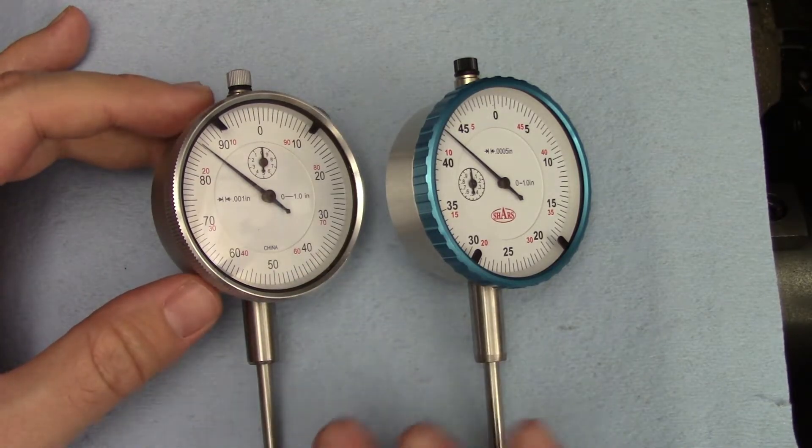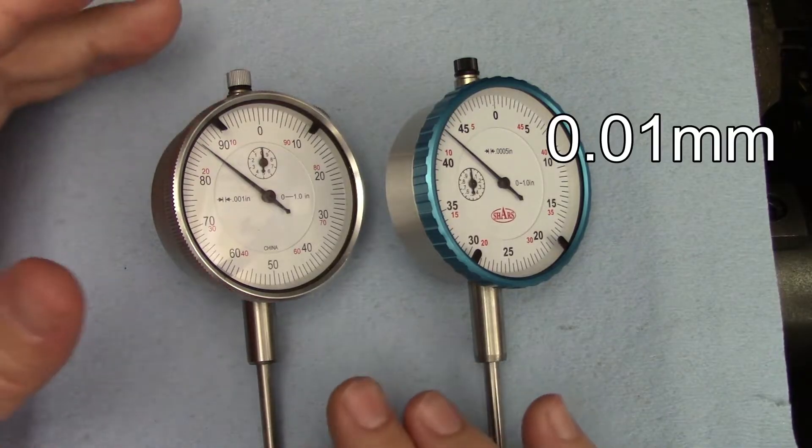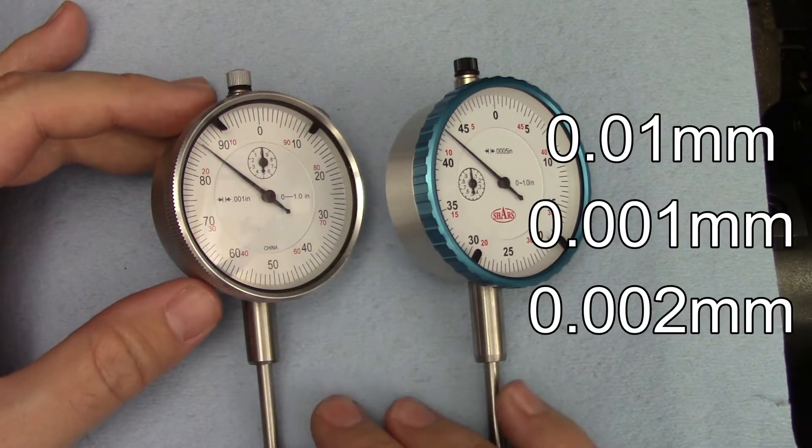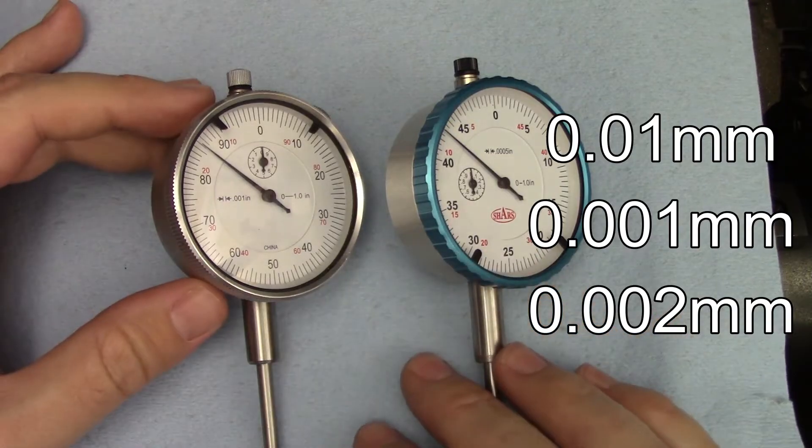In metric versions, you'll most often find them in hundredths of a millimeter, although one and two micron indicators are pretty easy to find as well.